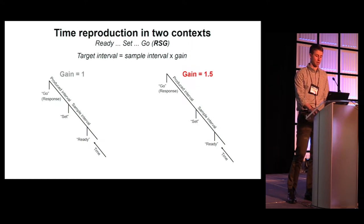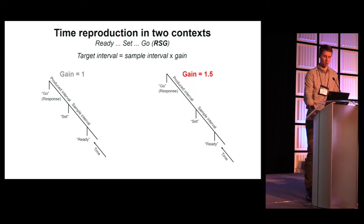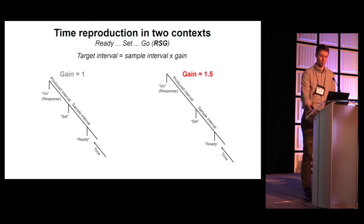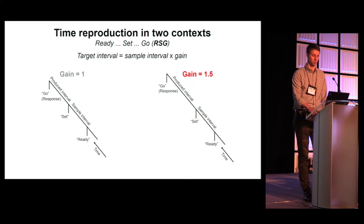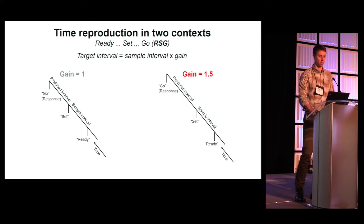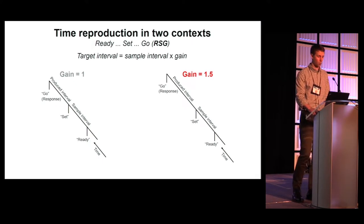In the first context, the gain is one and subjects are asked to reproduce an interval one and a half times as long as the sample. Let me show you a few example trials. Throughout the rest of the talk, I will use the colors gray and red to denote the gain of one and 1.5 contexts.